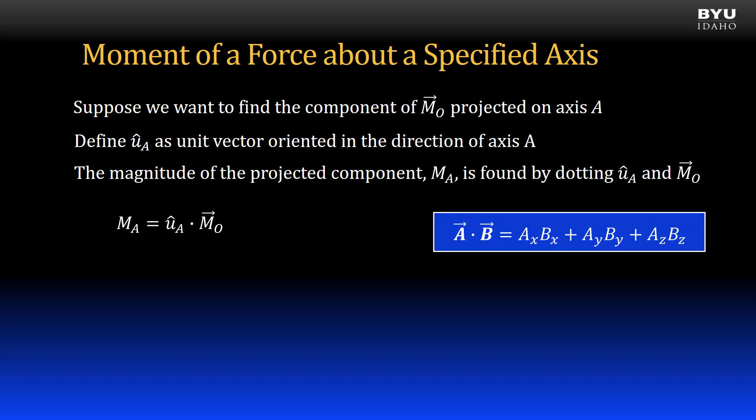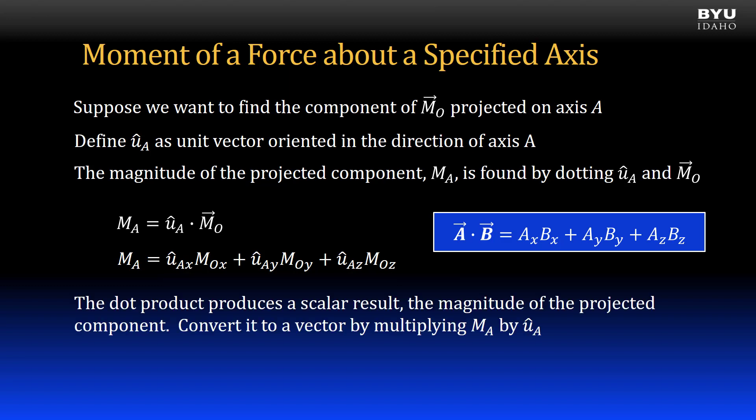Here is a reminder of how we perform the dot product with Cartesian vectors. So I can write an equation for vector UA dot vector MO like this. Remember that the dot product produces a scalar result, which here is the magnitude of the projected moment component. We can convert it to a vector by multiplying magnitude MA by the unit vector UA shown like this.